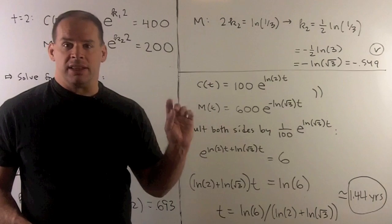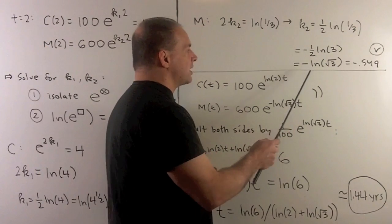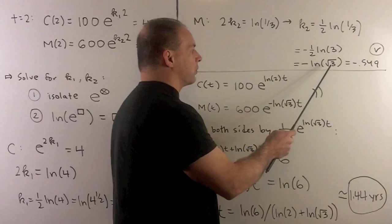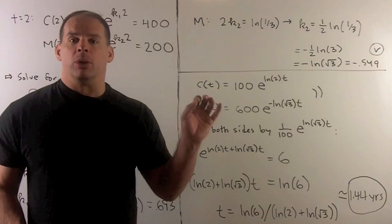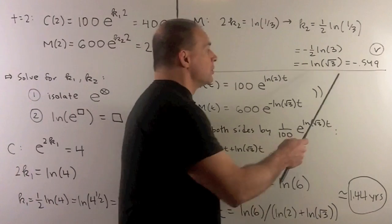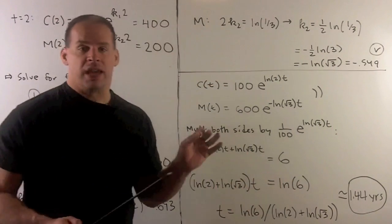So I'll bring the minus sign to the outside. We push the one-half to the inside and I have minus natural log square root of 3. We go to the calculator. We get minus 0.549. So this is negative and we in fact have decay. So that checks out.